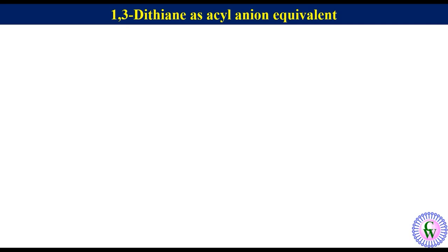1,3-dithiane as acyl anion equivalent. 1,3-dithiane is a six-membered ring heterocycle with four CH2 units and two sulfur atoms in the ring, where the sulfur atoms have a 1,3 relation.